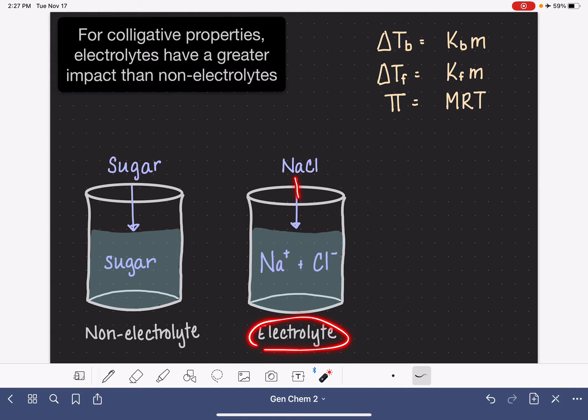Because electrolytes dissociate into two particles or sometimes three or maybe even four, the concentration of particles is greater for an electrolyte than it is for a non-electrolyte. Anytime we have an electrolyte, we're going to have more particles present in the solution than if we had a non-electrolyte.